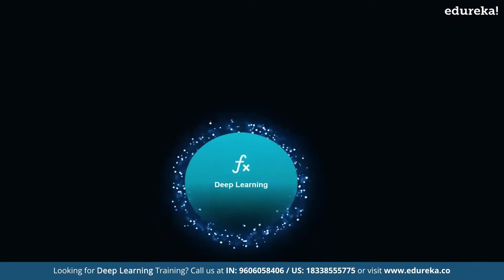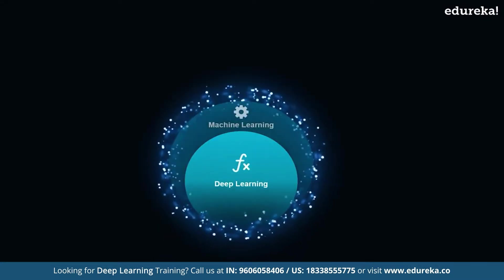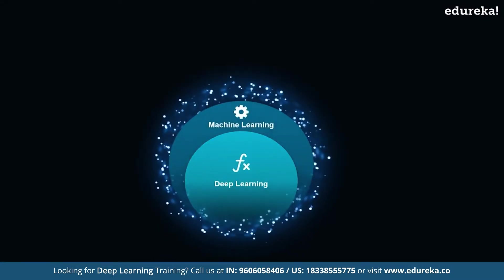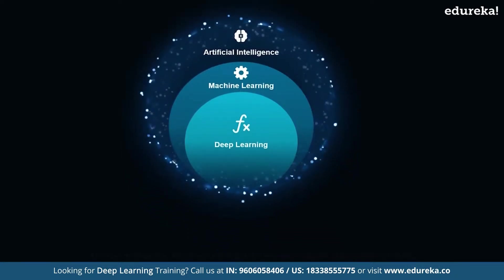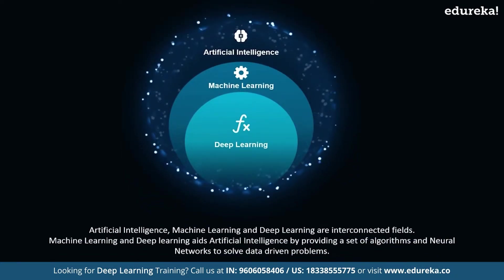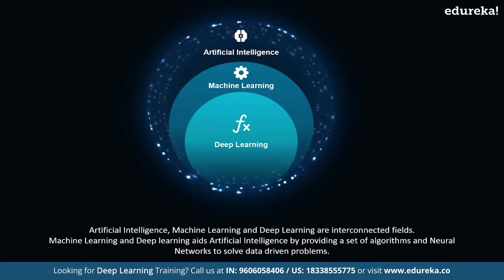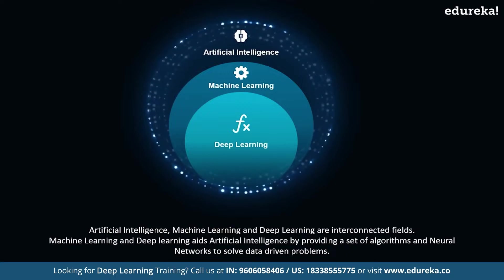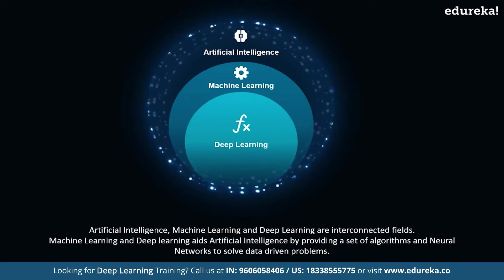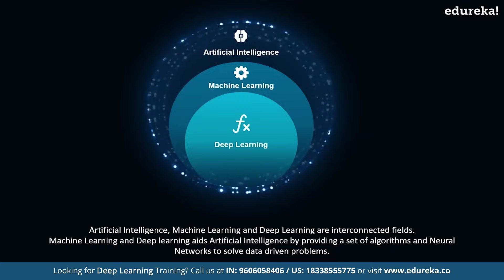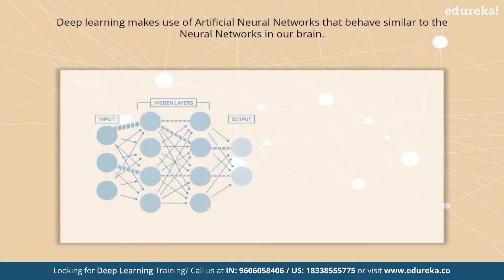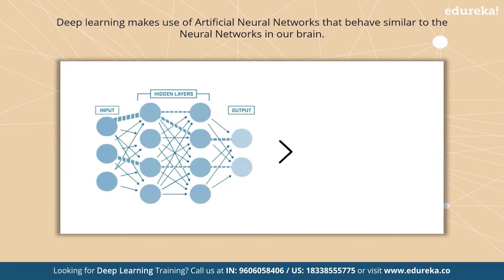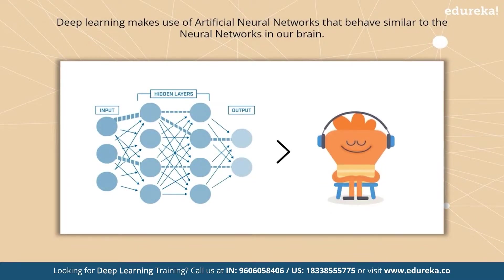Deep learning in itself is a part of machine learning, which falls under the larger umbrella of artificial intelligence. Artificial intelligence, machine learning, and deep learning are interconnected fields where machine learning and deep learning aid artificial intelligence by providing a set of algorithms and neural networks to solve data driven problems. Deep learning makes use of artificial neural networks that behave similar to the neural networks in our brain.